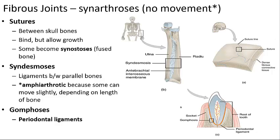Fibrous joints include sutures — synarthrotic joints located between the bones of the skull where the edges of the bones are interlocked and bound together by dense fibrous connective tissue. Syndesmoses are a type of fibrous joint where the bones are connected by an interosseous ligament and are amphiarthrotic. The most common example is the distal articulation between the tibia and fibula, called the tibial-fibular joint.